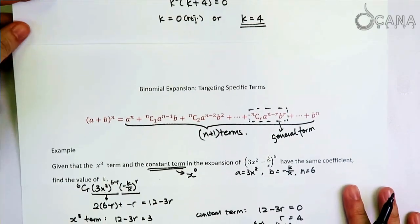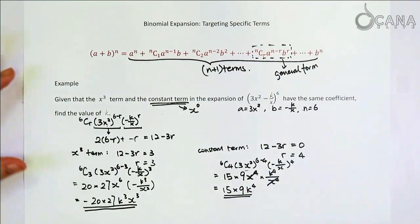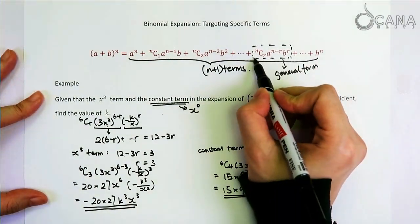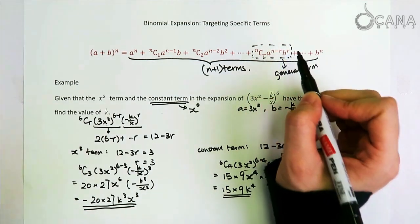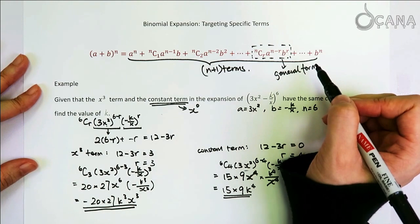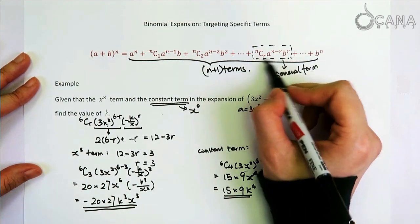So the whole technique that we've been talking about here is how to use this very important general form of a term in the sequence to target at the specific term that you want to find in the very long expansion. So I hope you memorize this. I hope you have found the explanation helpful. You can check out the links here or subscribe to our channel for more IB teaching videos.